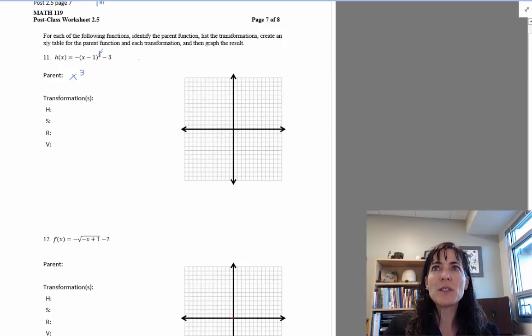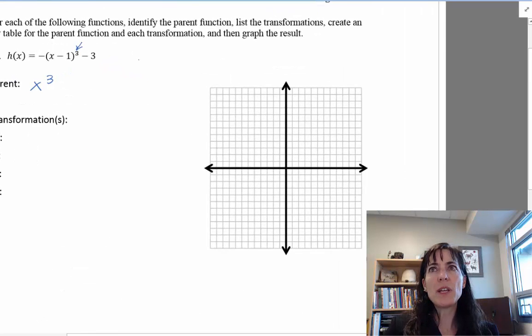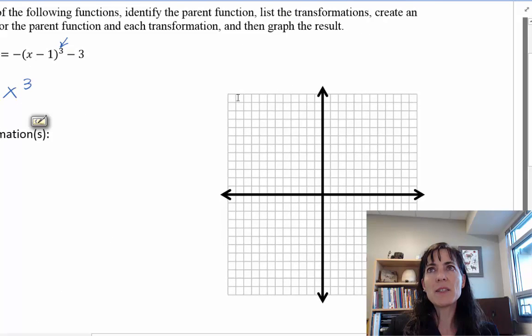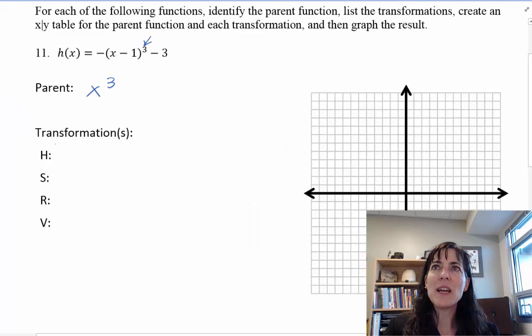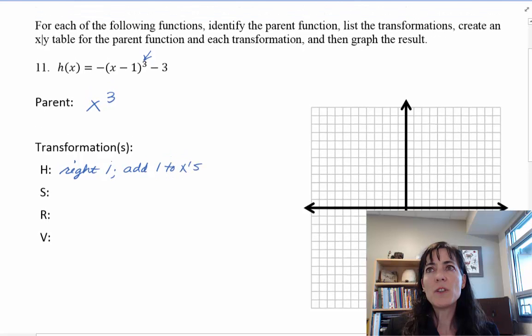My transformations, looking inside there with the X, I see a minus one. And that tells me that I would say I was going left one, but remember it's on the X. And the X goes opposite what you would think. So it's going right one. And what that means is add one to the X's.